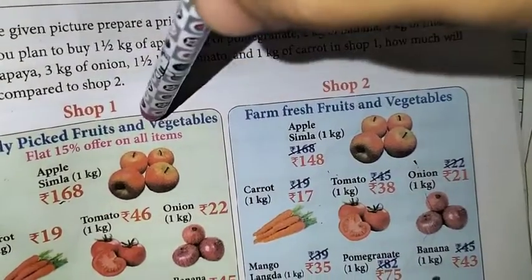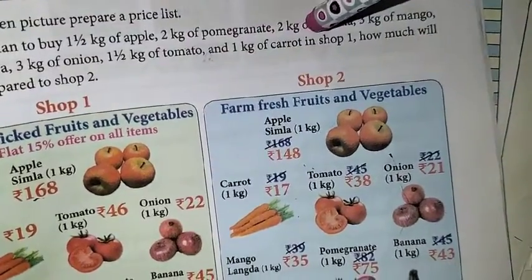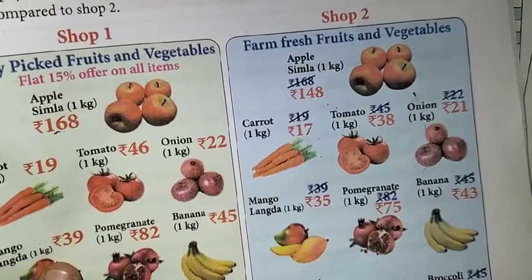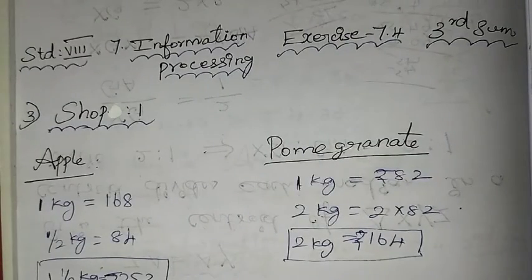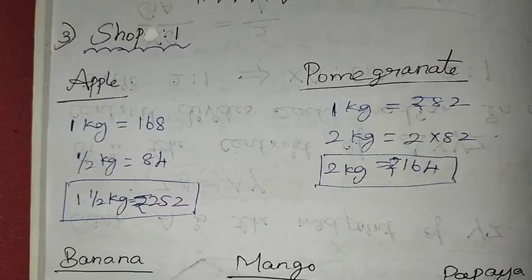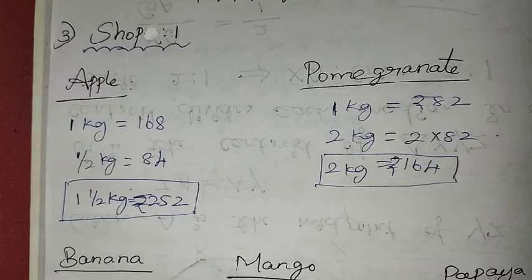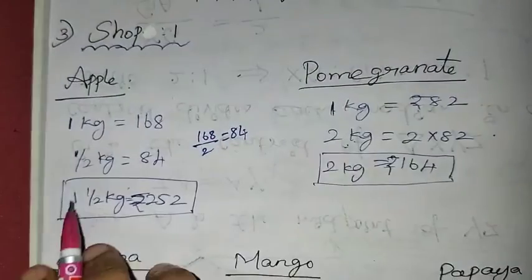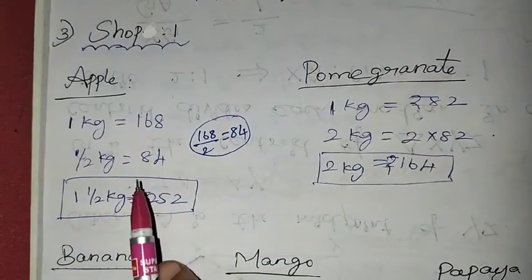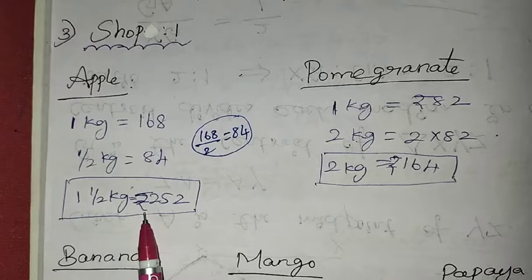Shop 1 has a 15% off, so we calculate item by item. For apple: 1 kg = Rs. 168, and half kg = 168 divided by 2 = Rs. 84. So 1.5 kg of apple = 168 + 84 = Rs. 252.